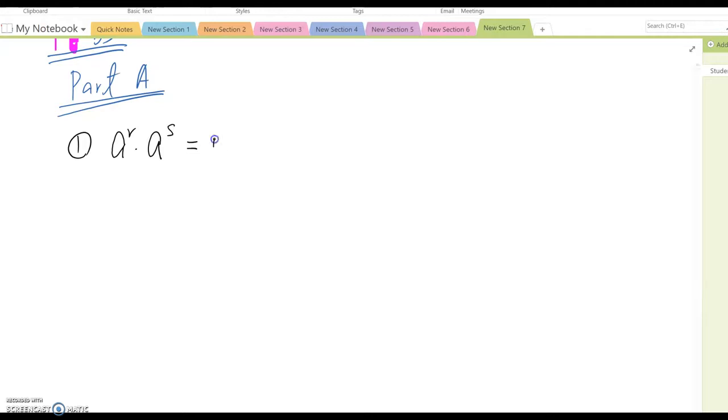This means A to the R plus S. The reason is, if we make maybe A squared times A cubed. A squared means A times A. A cubed means A times A times A. Therefore, this means A times A times A times A times A.